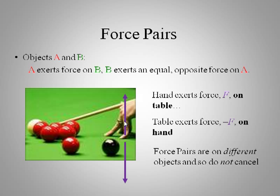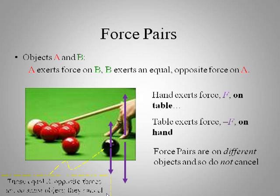As contrasting, let's look at the forces on this ball right here. You have a weight force and you have a normal force. These equal and opposite forces are acting on the same object. These do cancel. These force pairs over here, the hand on the table, table on the hand, those do not.